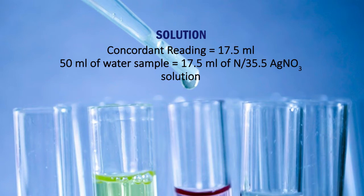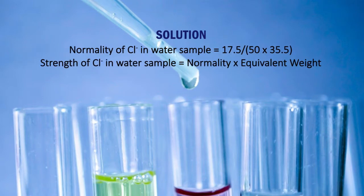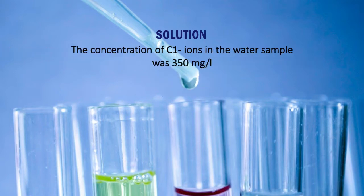50 ml of water sample is equivalent to 17.5 ml of M/35.5 silver nitrate solution. The normality of chloride ion in the water sample equals 17.5 divided by 50, into 35.5. Strength of chloride in the water sample equals normality into equivalent weight. The concentration of chloride ion in the water sample is 350 mg per liter.